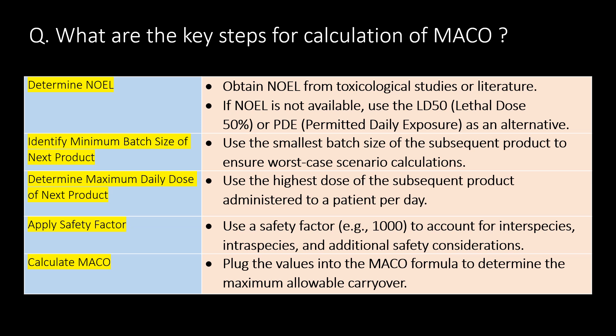Step 2 — Identify the minimum batch size of the next product. Use the smallest batch size of the subsequent product to ensure a worst-case scenario calculation. Step 3 — Determine the maximum daily dose of the next product. Use the highest dose of the subsequent product administered to the patient per day.